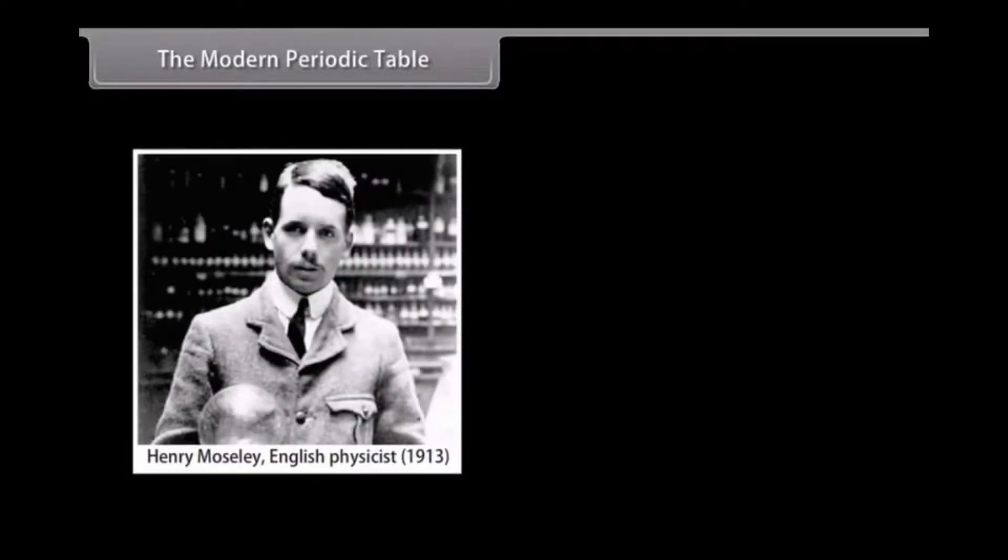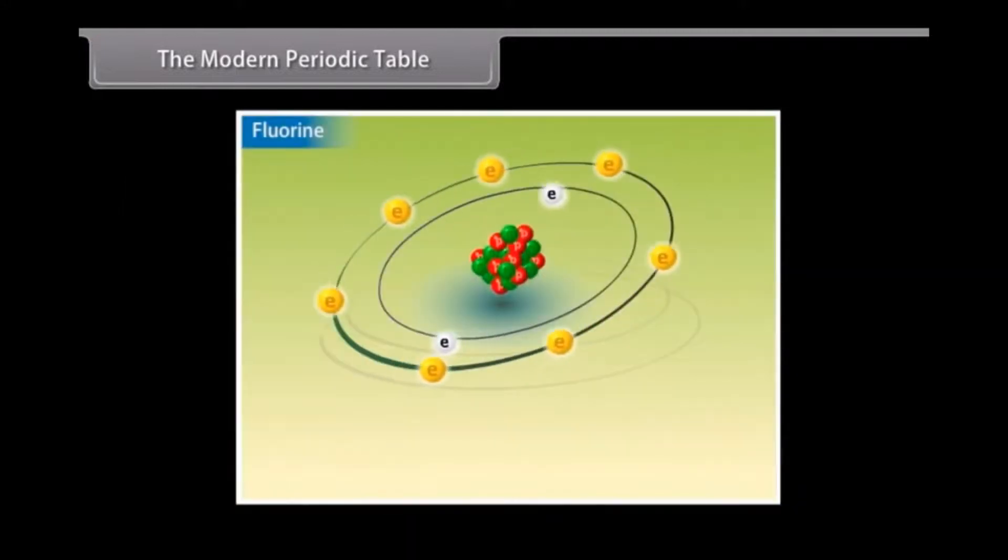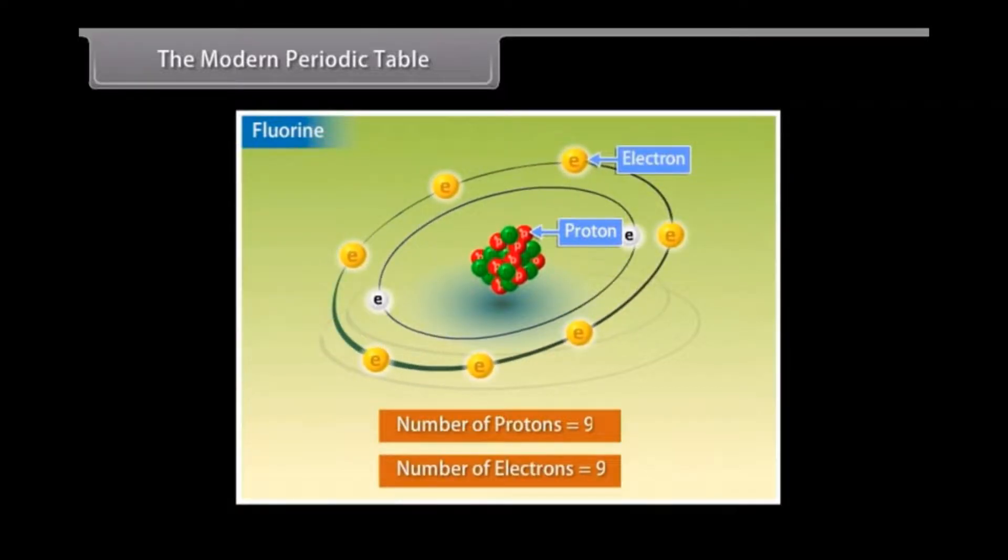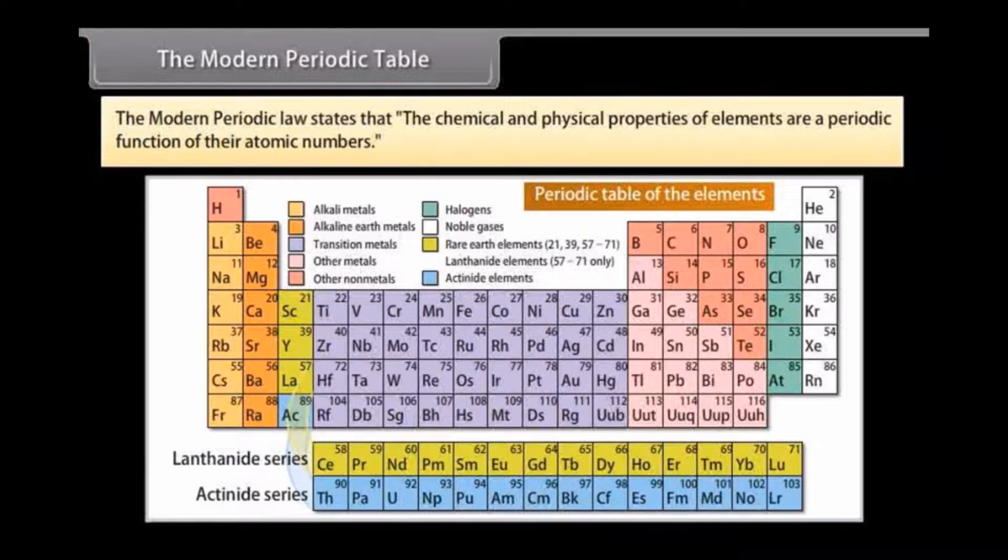The modern periodic table. Henry Moseley, an English physicist, in 1913, discovered that the atomic number is the most fundamental property of an element. Atomic number of an element refers to the number of protons in the nucleus of its atom. The number of electrons in the neutral atom is also equal to its atomic number. This led to a change in the periodic law. The modern periodic law states that the chemical and physical properties of elements are a periodic function of their atomic numbers.